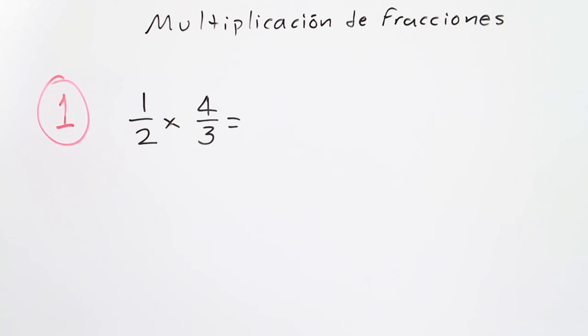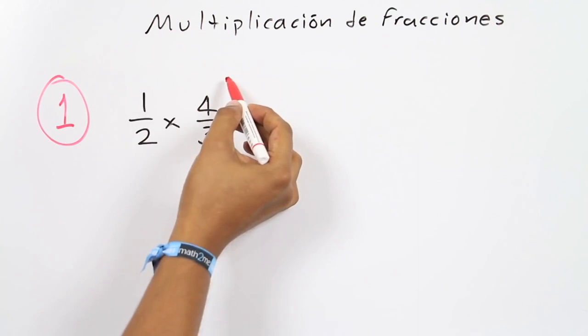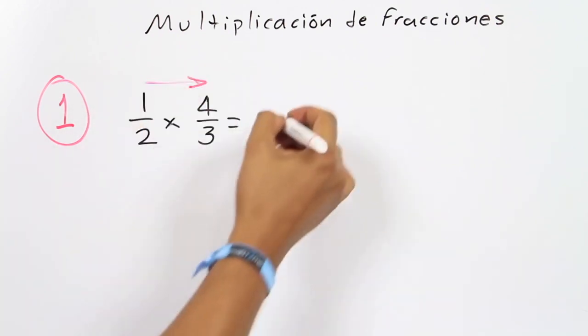The procedure to multiply fractions is very simple to remember. You just have to multiply all the top numbers. In this case, 1 times 4 equals 4.